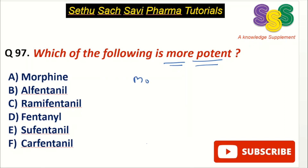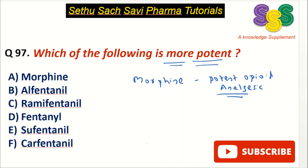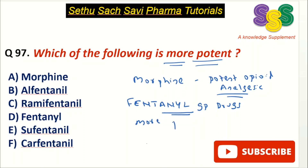We know that Morphine is a potent opioid analgesic — it's a strong painkiller. However, compared to Morphine, the Fentanyl group of drugs are in fact more potent than Morphine. So this is the first point you need to understand: Fentanyls are more potent than Morphine.